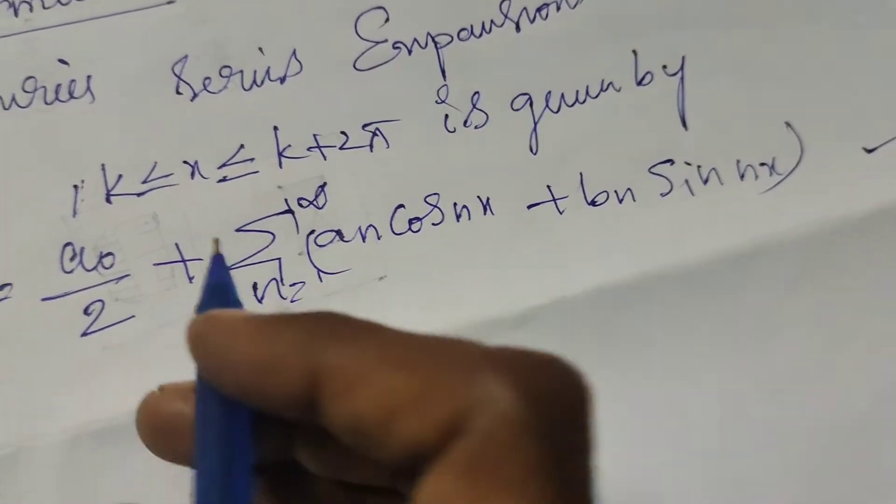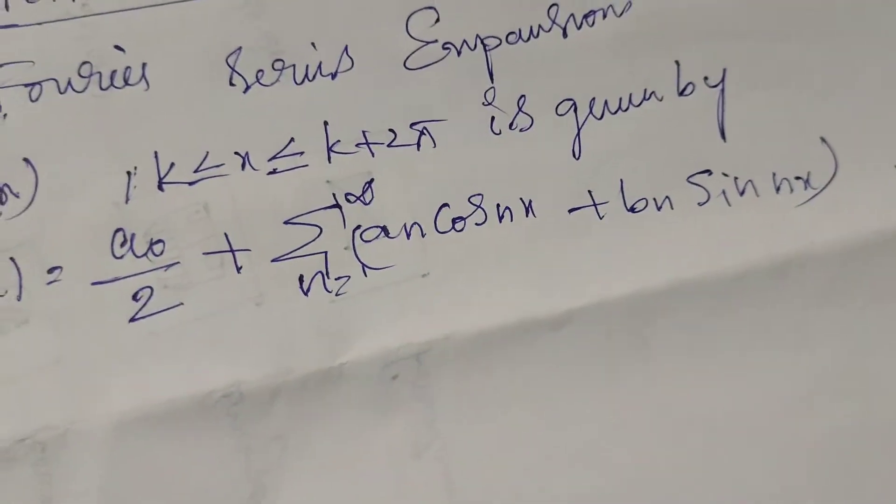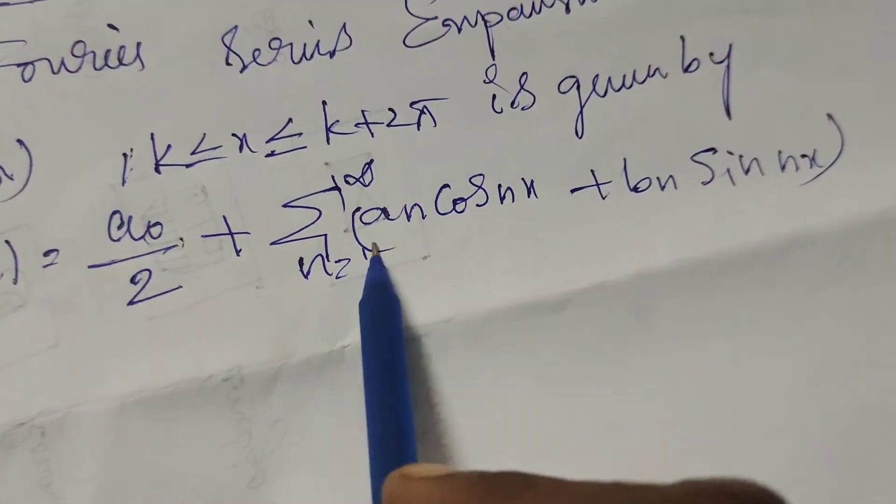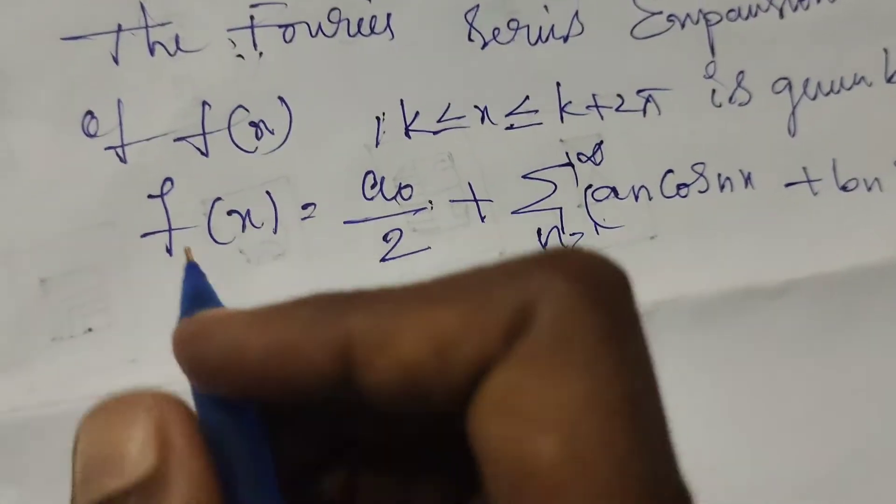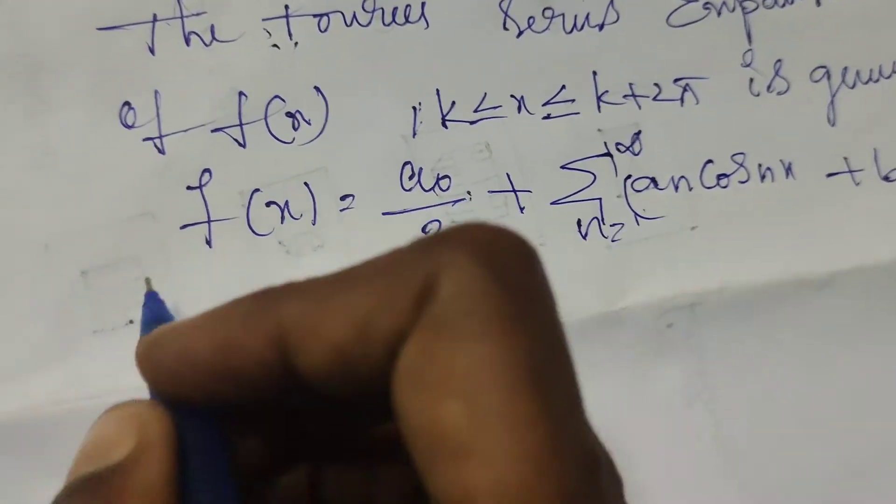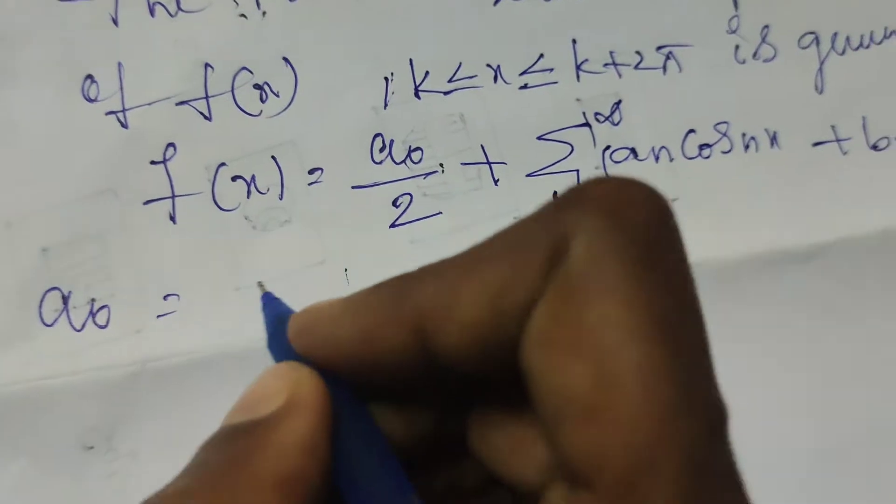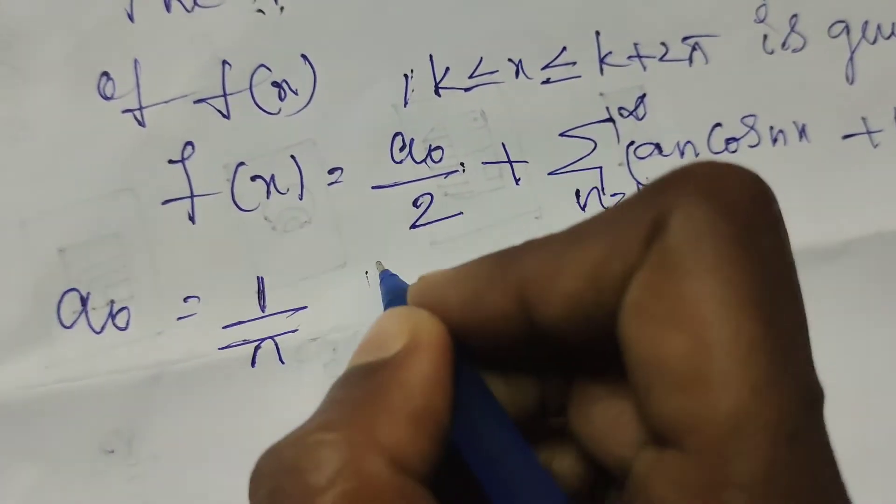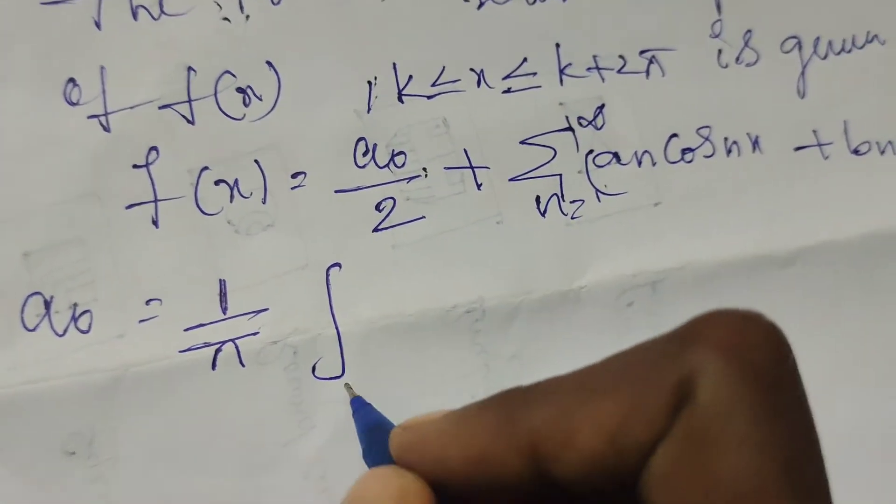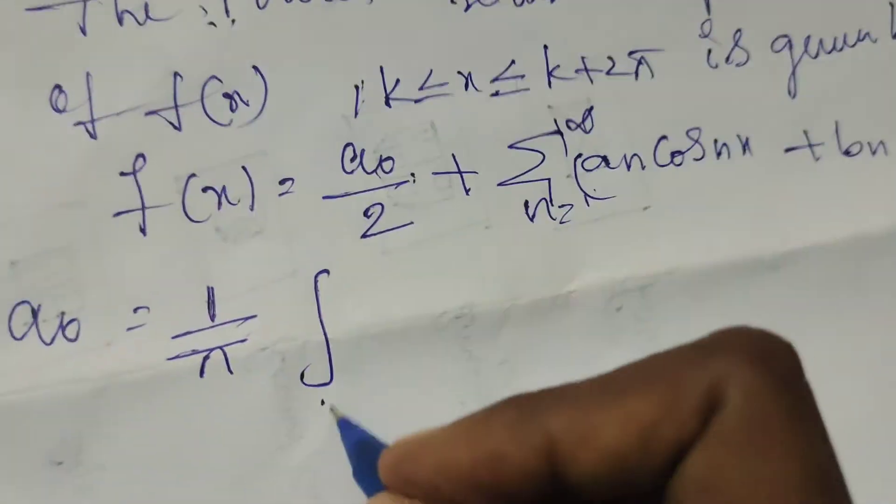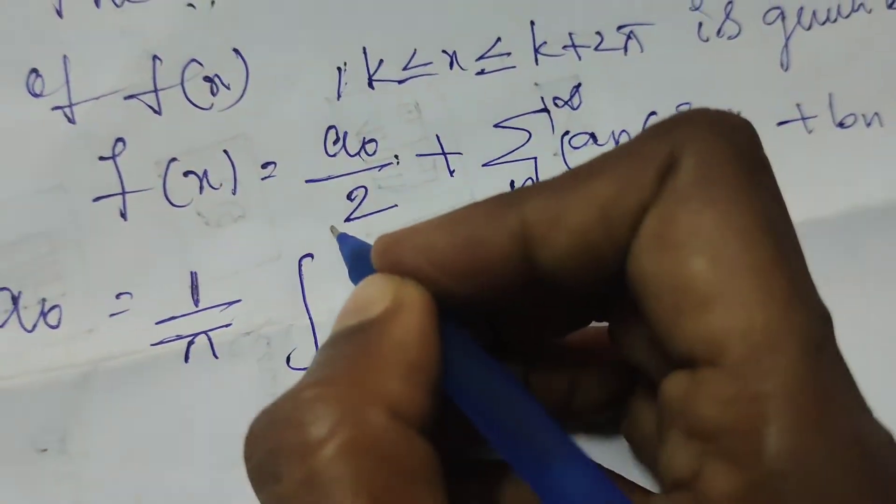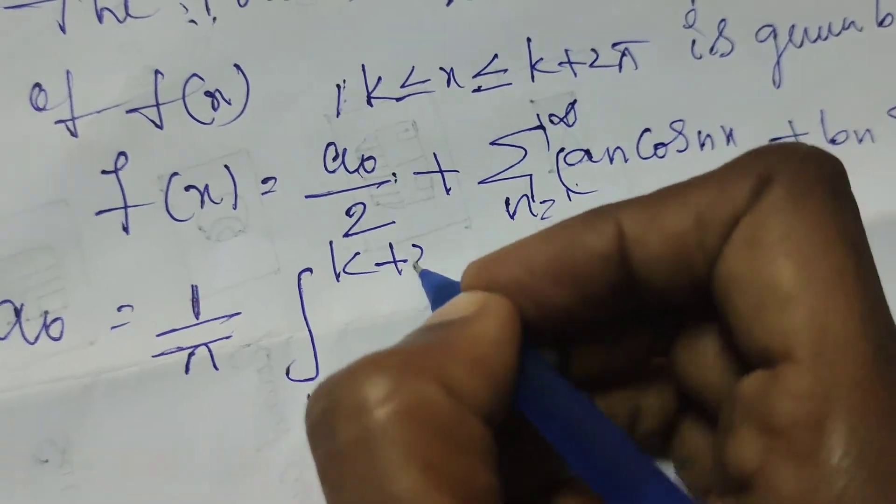Okay, now here a0, an and bn are the Fourier constants. Now here I write the constant a0 means 1 by π, the formulae here. The interval means here k to k plus 2π, therefore integral from k to k plus 2π of f of x dx.